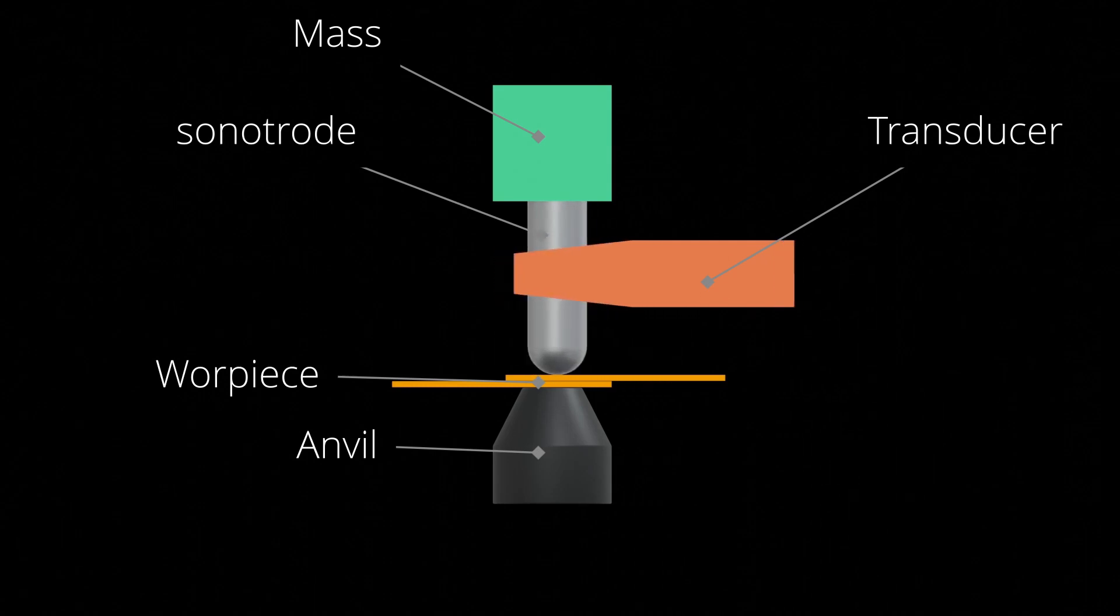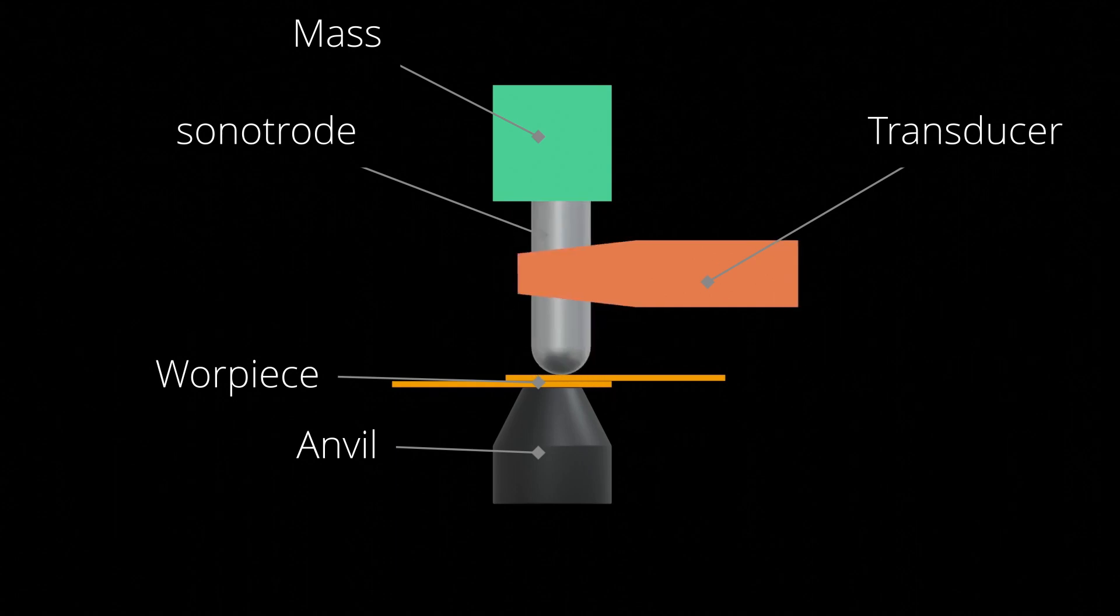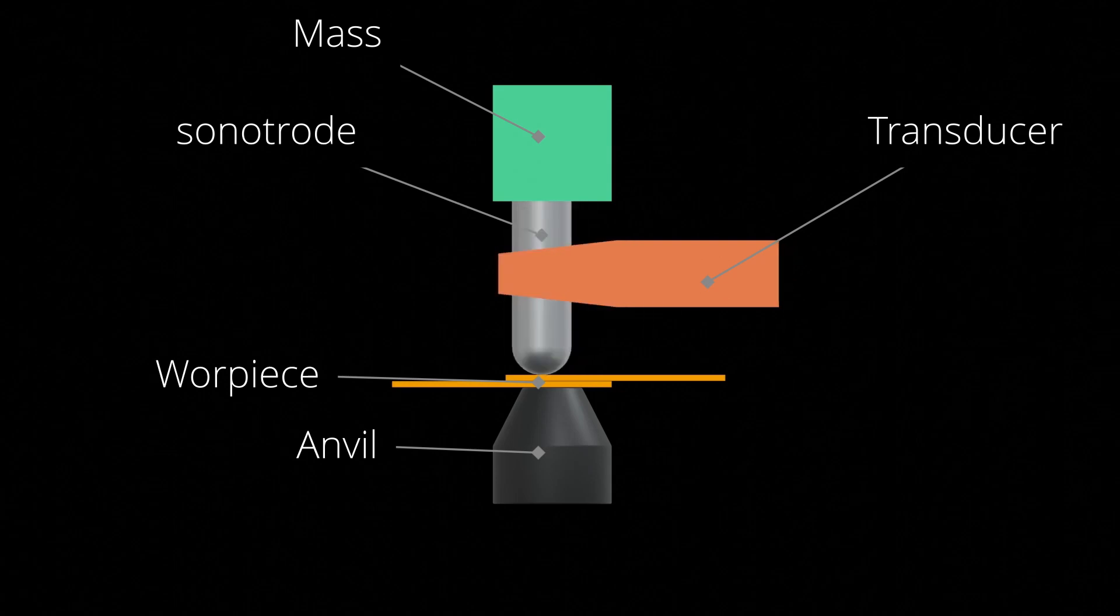This pressure is maintained between a flat lower support known as the anvil and an upper electrode referred to as the sonotrode, designed with a substantial radius to concentrate the force, as demonstrated visually.